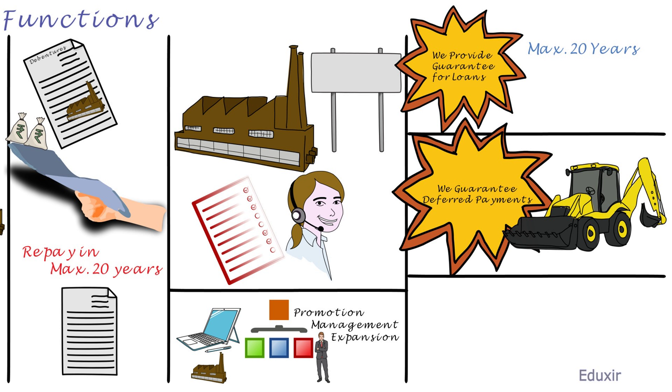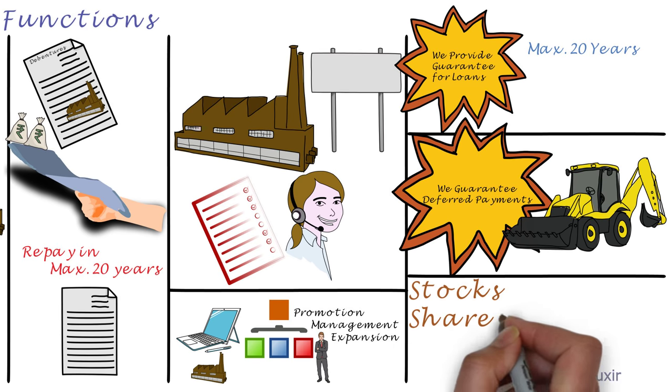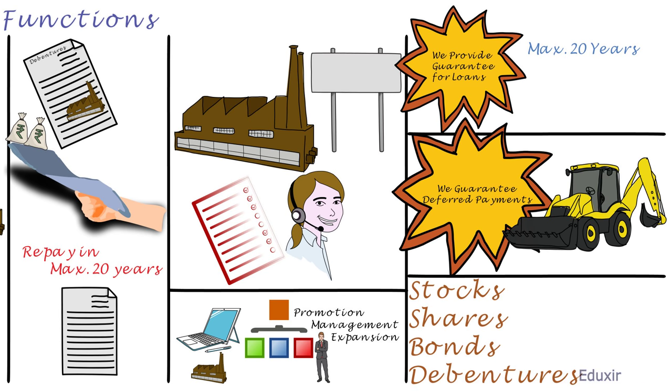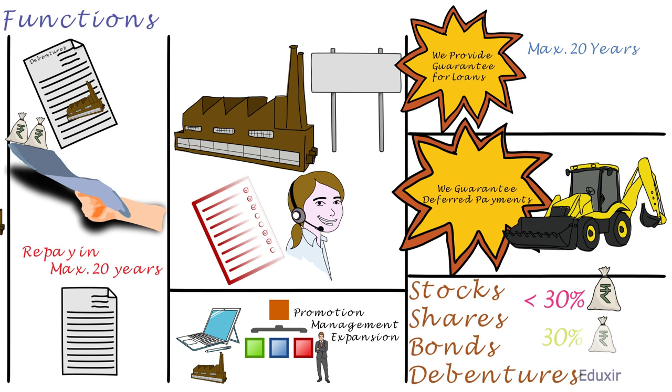To handle or own the subscription or purchasing of stocks, shares, bonds or debentures of an industrial concern within the limit of 30% of the subscribed capital or 30% of paid up share capital and free service, whichever is less. That means within the limit of the minimum of these two computed values.